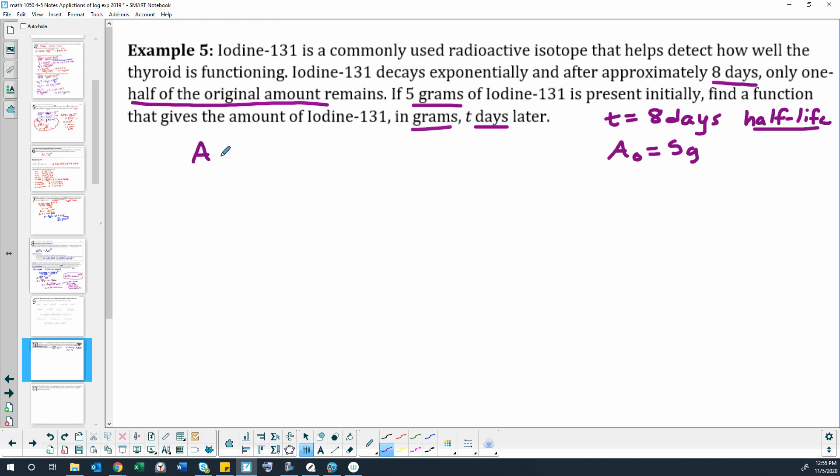Let's write down our formula, so A as a function of t is our initial amount e to the kt. What we really need to find here is k. Find k to get the formula.